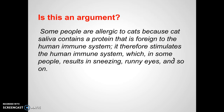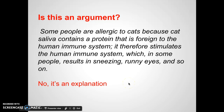Take a look at this — pause and think about whether it's an argument or just a claim or something else: 'Some people are allergic to cats because cat saliva contains a protein that is foreign to the human immune system. It therefore stimulates the human immune system, which in some people results in sneezing, runny eyes, and so on.' This is an explanation. The word 'therefore' might make you think there's a conclusion, but really we just have an explanation of a process — this happens, then this happens, then this happens. It's just an explanation of what is the case.